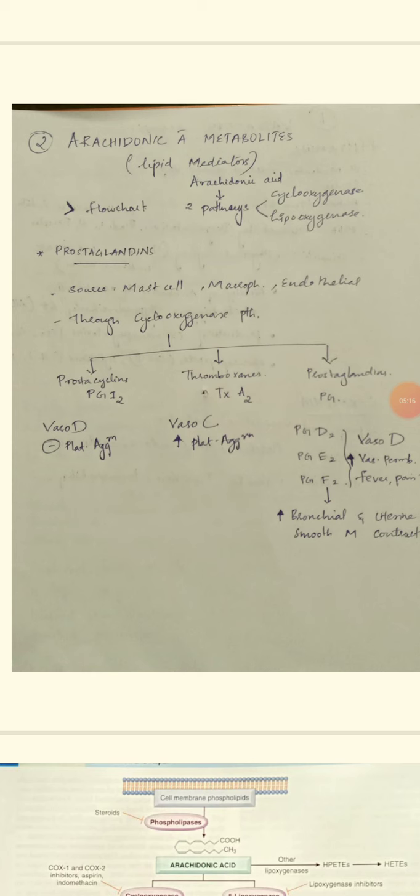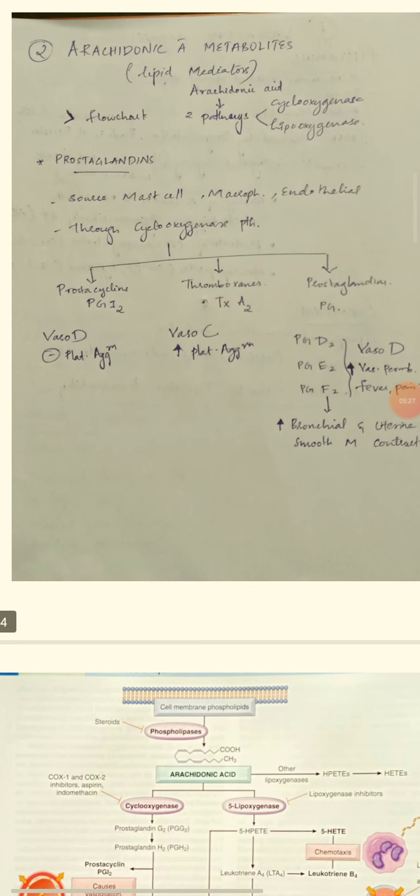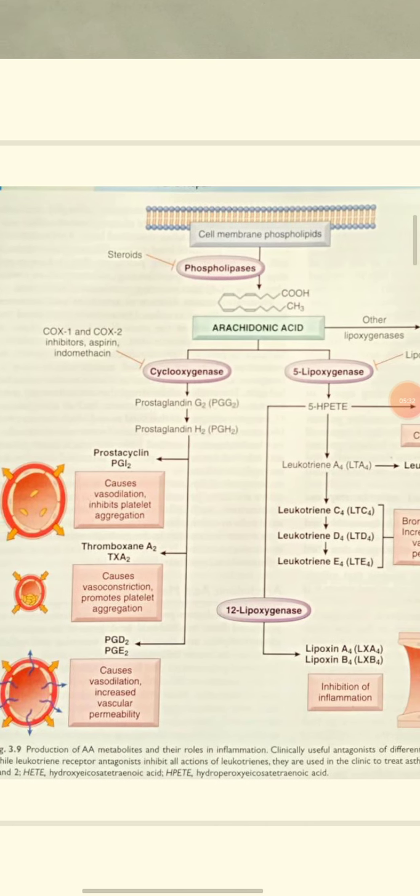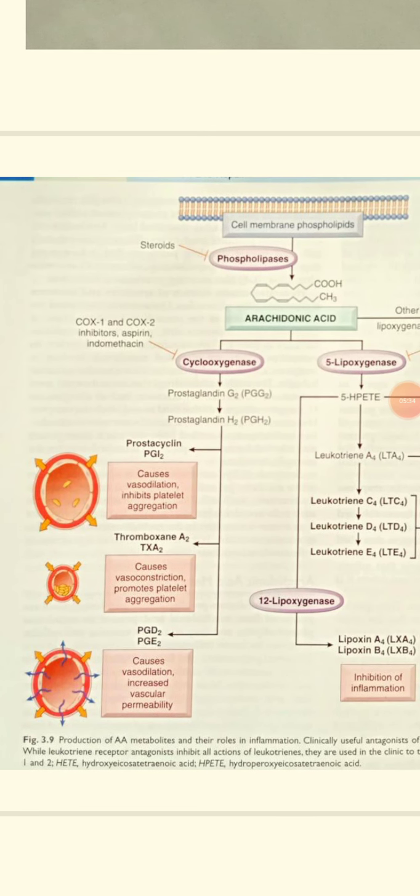The cyclooxygenase pathway produces prostaglandins. The source of prostaglandins includes mast cells, macrophages, and endothelial cells, which produce prostaglandins through cyclooxygenase.